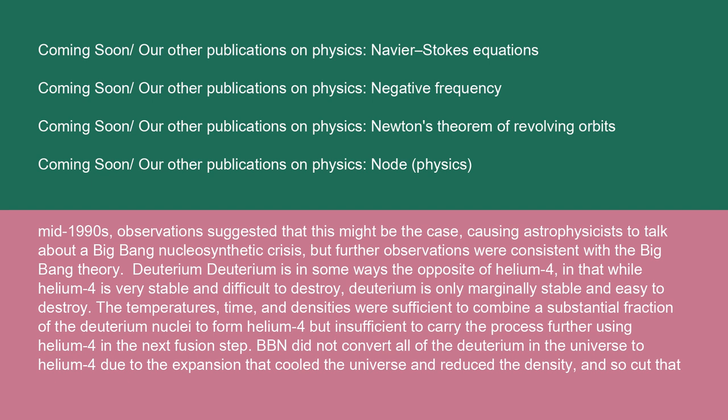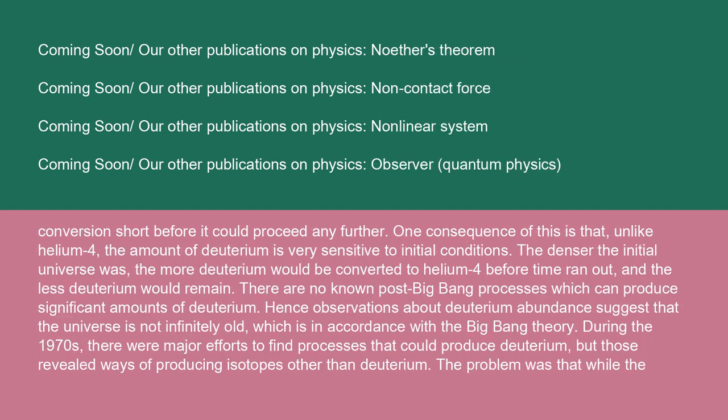Deuterium: Deuterium is in some ways the opposite of helium-4, in that while helium-4 is very stable and difficult to destroy, deuterium is only marginally stable and easy to destroy. The temperatures, time, and densities were sufficient to combine a substantial fraction of the deuterium nuclei to form helium-4, but insufficient to carry the process further using helium-4 in the next fusion step. BBN did not convert all of the deuterium in the universe to helium-4 due to the expansion that cooled the universe and reduced the density, and so cut that conversion short before it could proceed any further. One consequence of this is that unlike helium-4, the amount of deuterium is very sensitive to initial conditions. The denser the initial universe was, the more deuterium would be converted to helium-4 before time ran out and the less deuterium would remain.